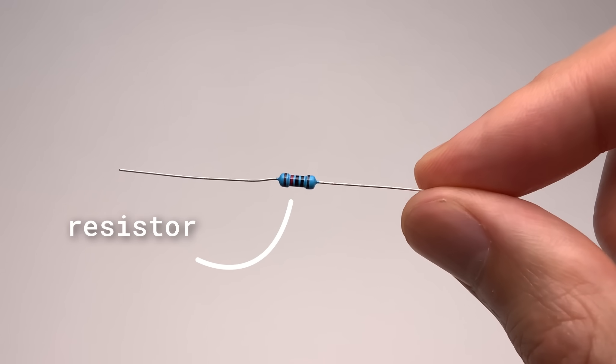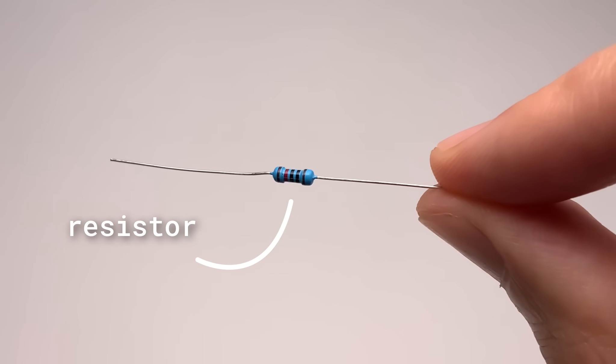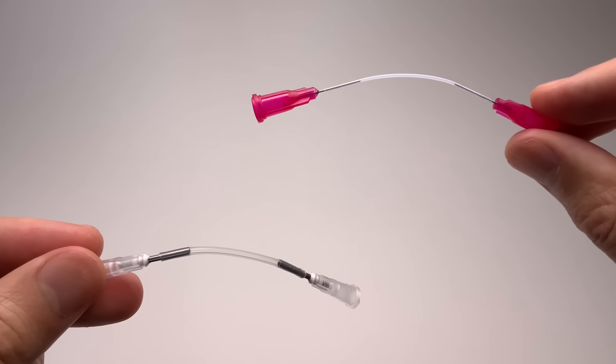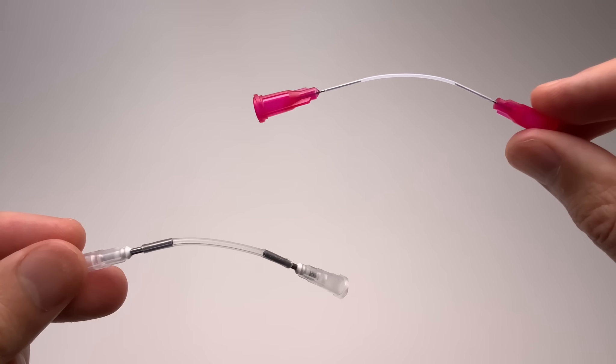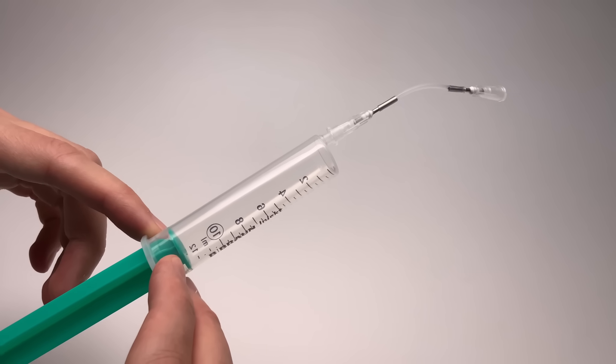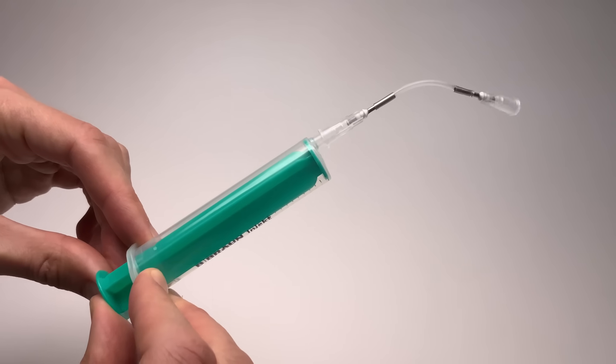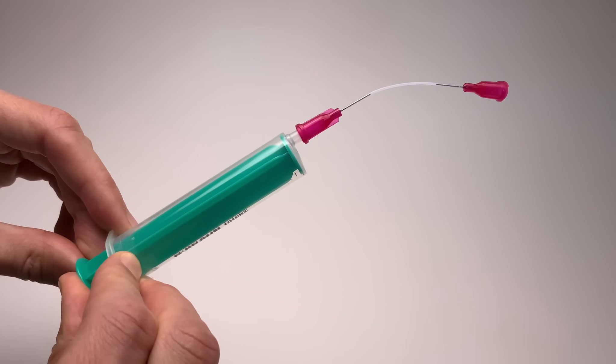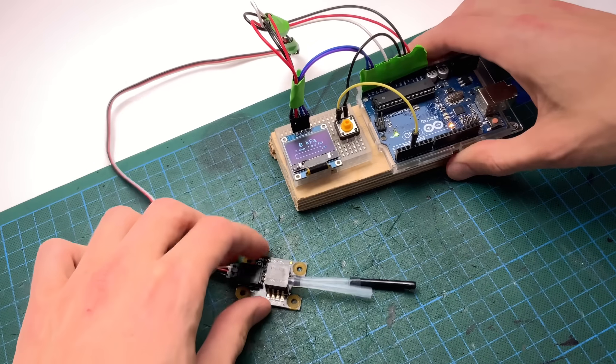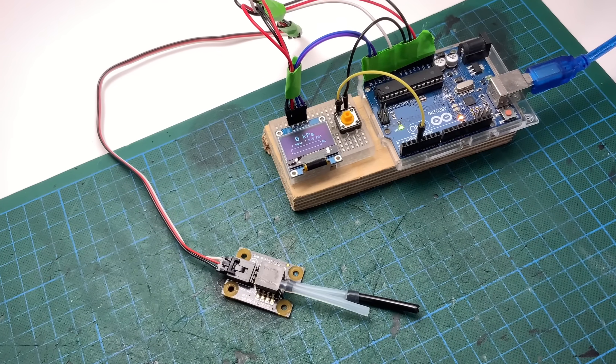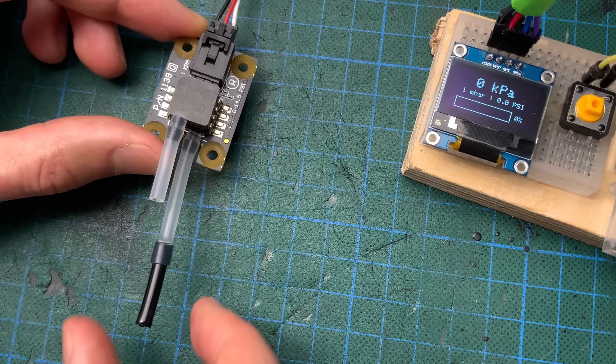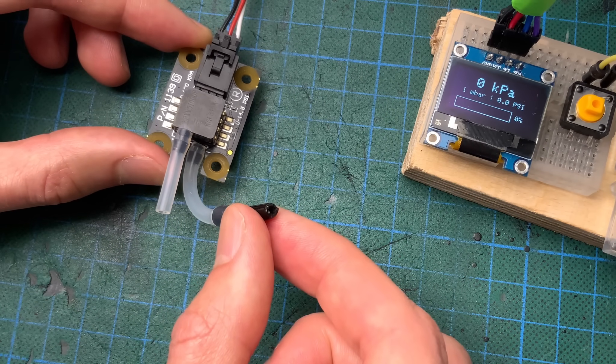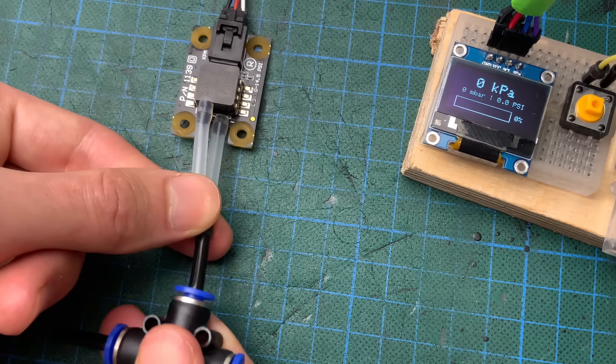In electronics, resistors slow down the flow of electrons. In our air logic, we can use thin tubes to slow down the flow of air. You can feel it. Push air through a big opening and it's easy. Push through a tiny opening and you really have to work for it. To put numbers on resistance, we're using a simple test rig. The sensor compares pressure against atmosphere.